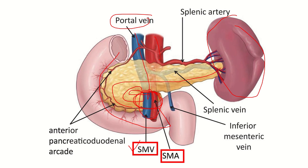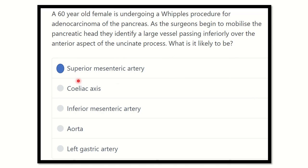In this picture, we can see the pancreas, spleen, duodenum, portal vein, and inferior vena cava. The vessels lying below the pancreatic head, anterior to the uncinate process — we can see two important structures: one is the superior mesenteric vein, another is the superior mesenteric artery. The superior mesenteric vessels pass anterior to the uncinate process and inferior to the head of the pancreas. Also important for the MRCS exam: the inferior mesenteric vein and the splenic vein form the portal vein together with the superior mesenteric vein. The inferior mesenteric vein drains into the splenic vein.